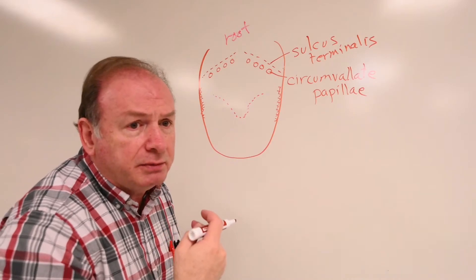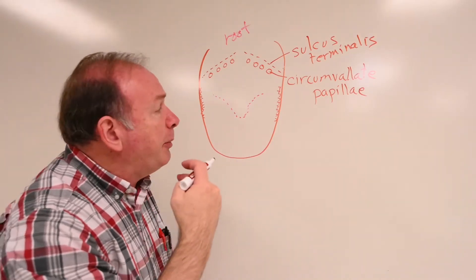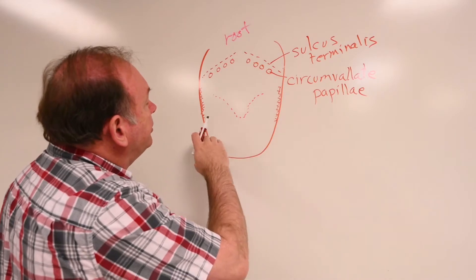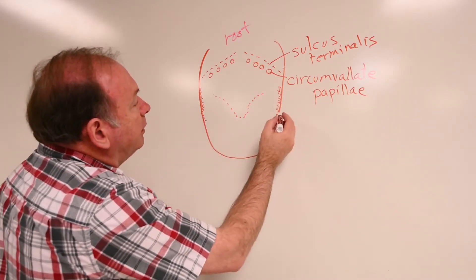That kind of forms the border over here, these foliate papillae. Foliate means like a leaf, like foliage.